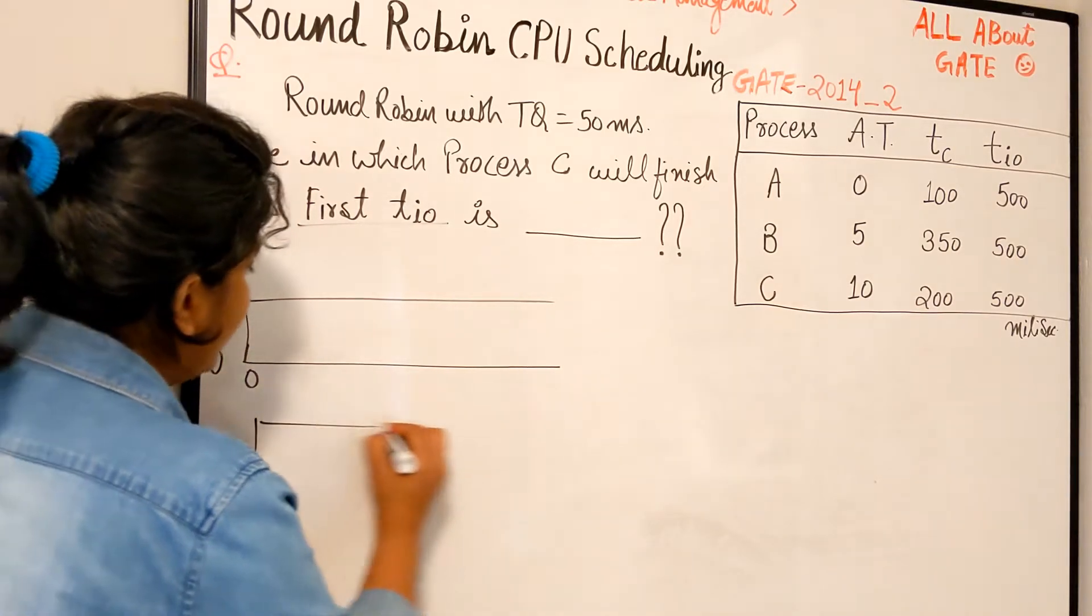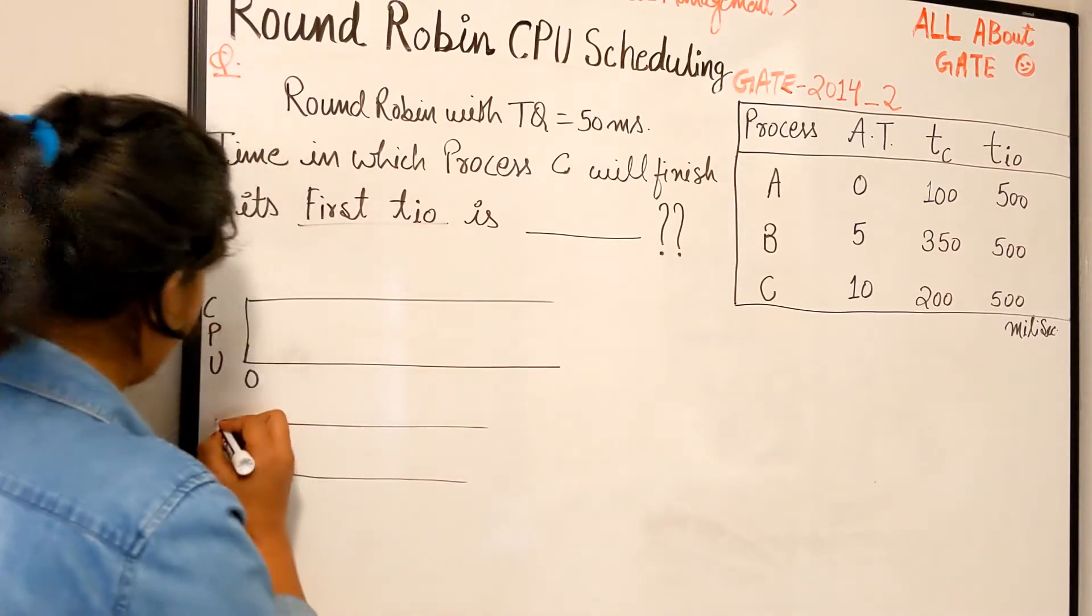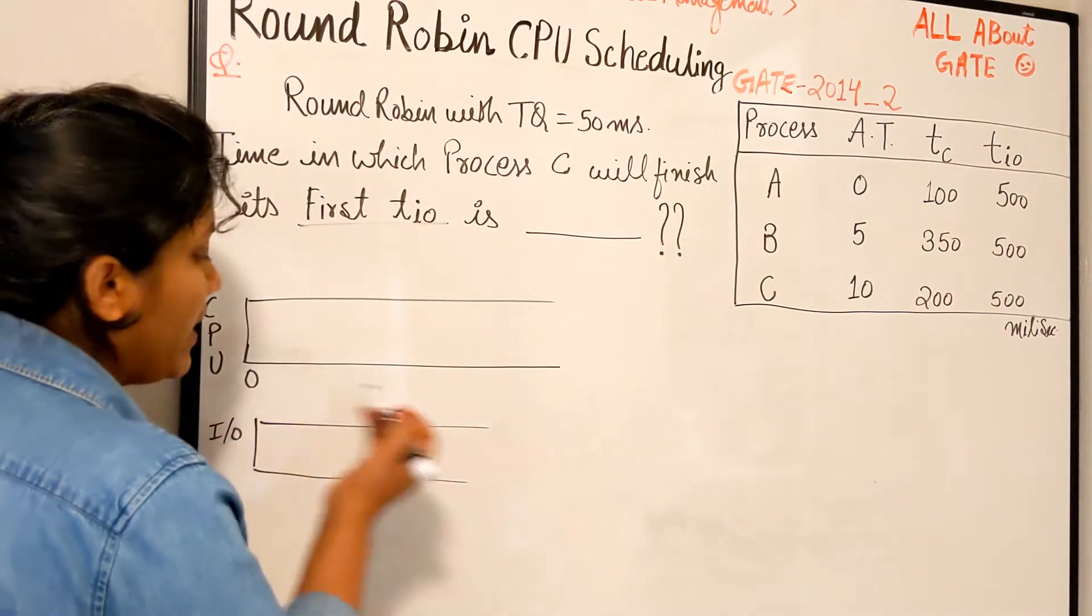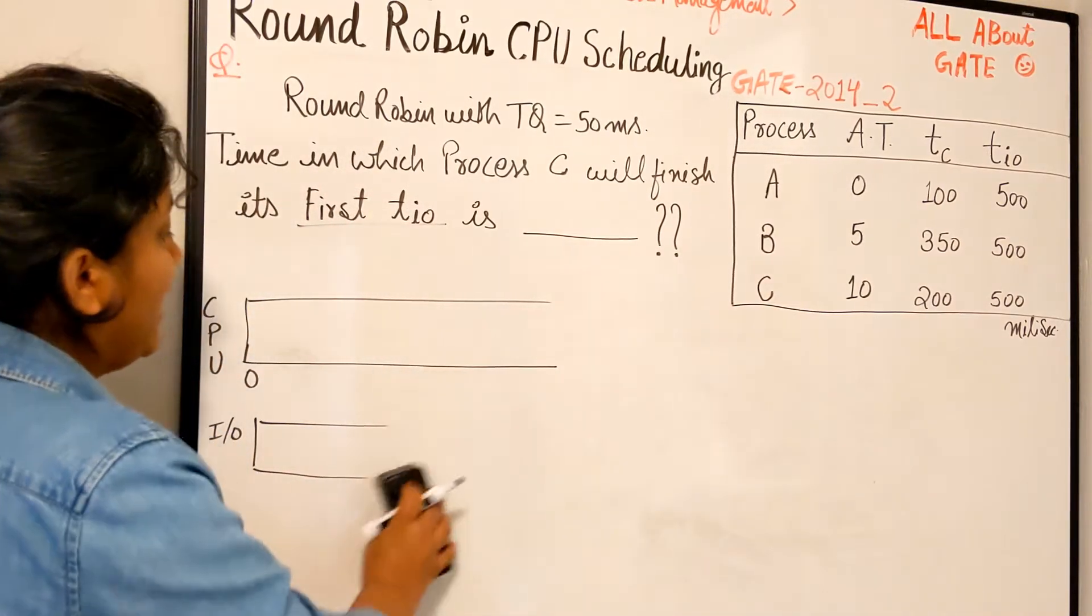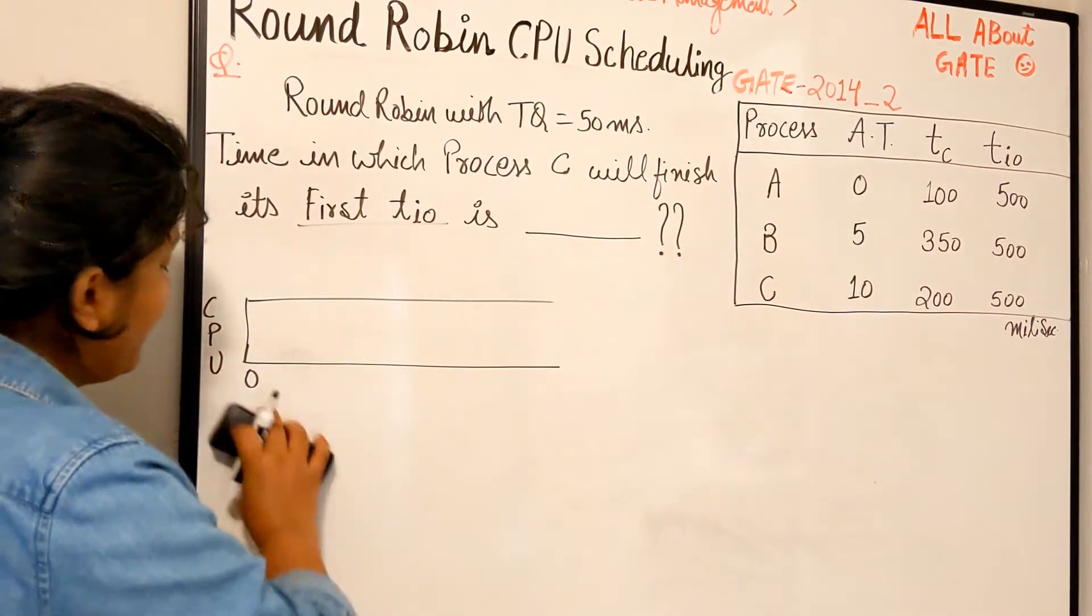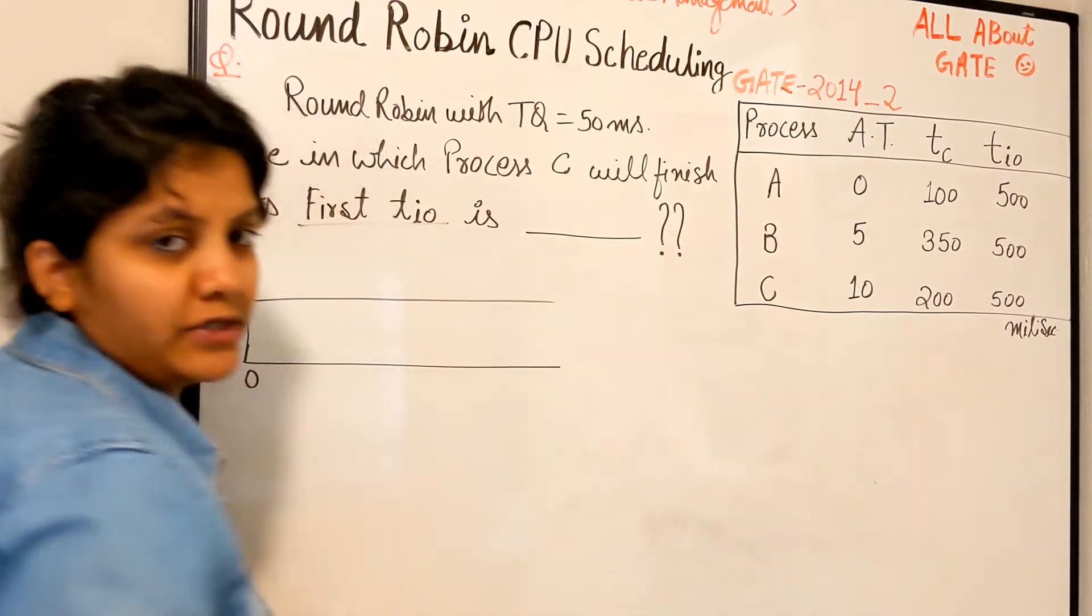All right, and you might also check here on the input-output which process is coming back. I don't think we really need to make a chart for it because we have separate IO devices available for each process, right?